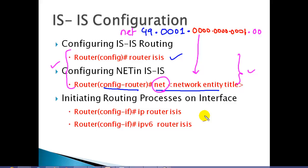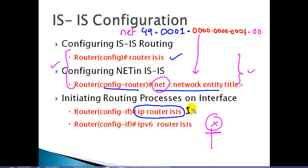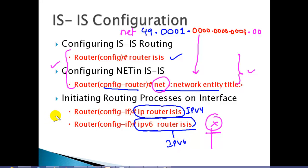To advertise any interface, for example a LAN interface, there is no network command in IS-IS. Instead, we go to the interface and give the command 'ip router isis' for IPv4 addresses. If you are also running IPv6, you use the 'ipv6 router isis' command. In this lab, we are going to run IS-IS for both IPv4 and IPv6, and then do some troubleshooting and additional configurations as required. We are running both IPv4 and IPv6 at the same time.